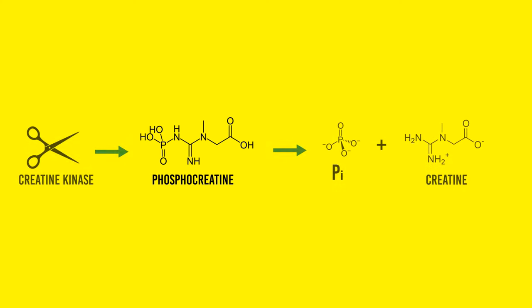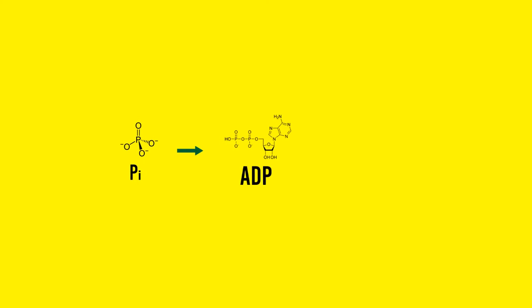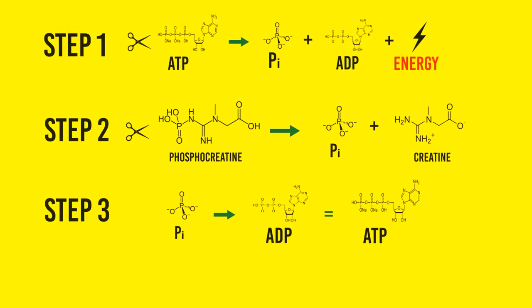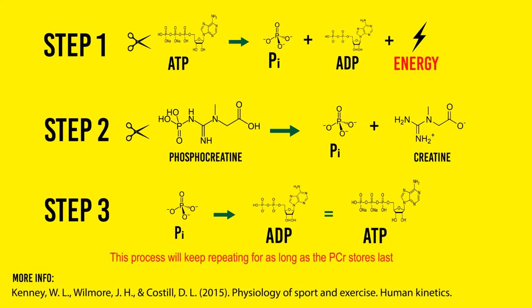This is where phosphocreatine comes to the rescue. One phosphocreatine is split into phosphate and creatine through an enzyme called creatine kinase, and the phosphate is added to the ADP left from before — giving us a new ATP. Phosphocreatine is mainly used as fuel for this system, and this process keeps repeating for as long as phosphocreatine stores last. If you do a max effort activity and this system gets activated, around 10 ATPs are produced per second, providing muscles with ATP like a machine gun until the phosphocreatine stores run out.